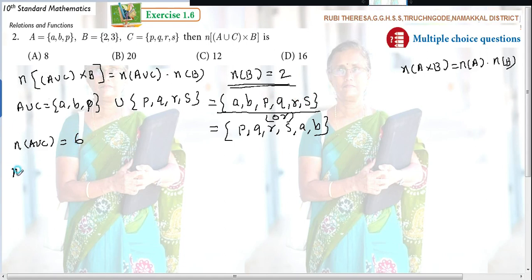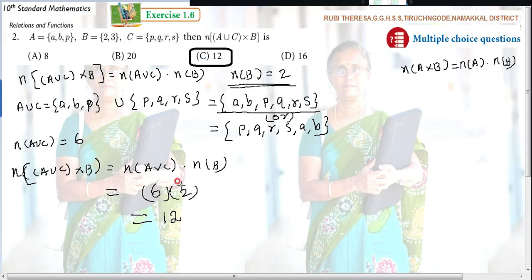So N of A union C cross B equal to N of A union C into N of B. This is into. Because cardinal number. N of A union C is how much? 6. 6 into 2. 6 times 2 is 12. Do you follow? So what is the answer here? 12 is the answer.